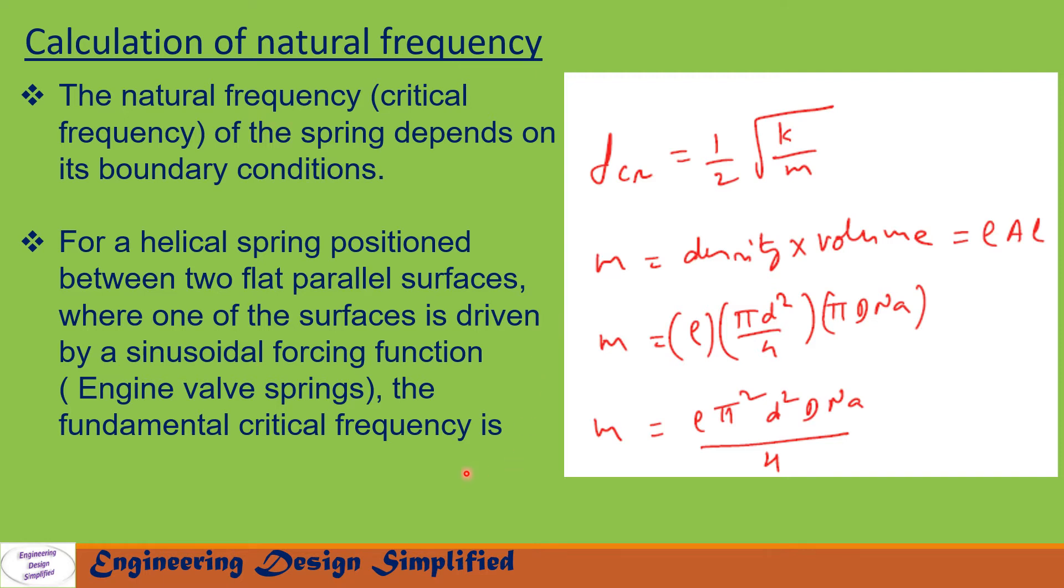the fundamental critical frequency is written as f_cr equals 1 by 2 square root of k by m, where k is the stiffness of the spring and m is the mass of the spring. m is written as m equals density into volume, that equals rho a l.